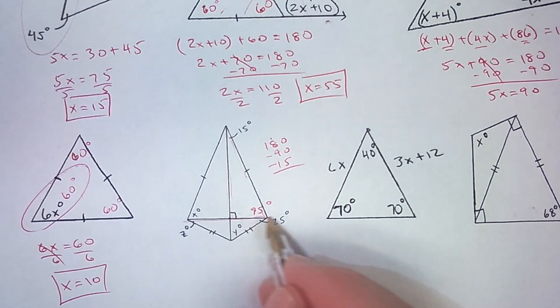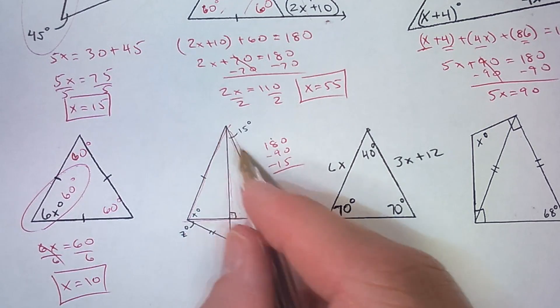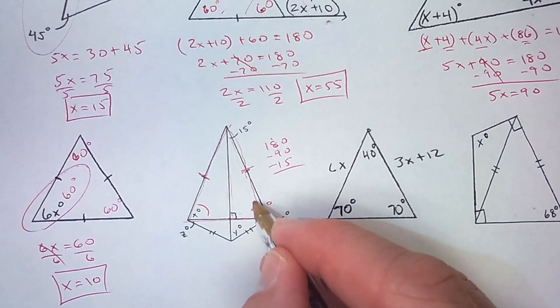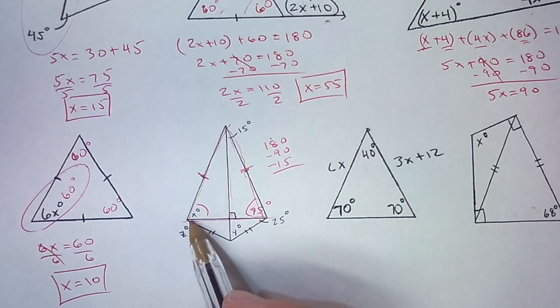Now this top triangle here, when I put these top two together, I get one big isosceles triangle. And in an isosceles triangle, the base angles are congruent. So x is 75.